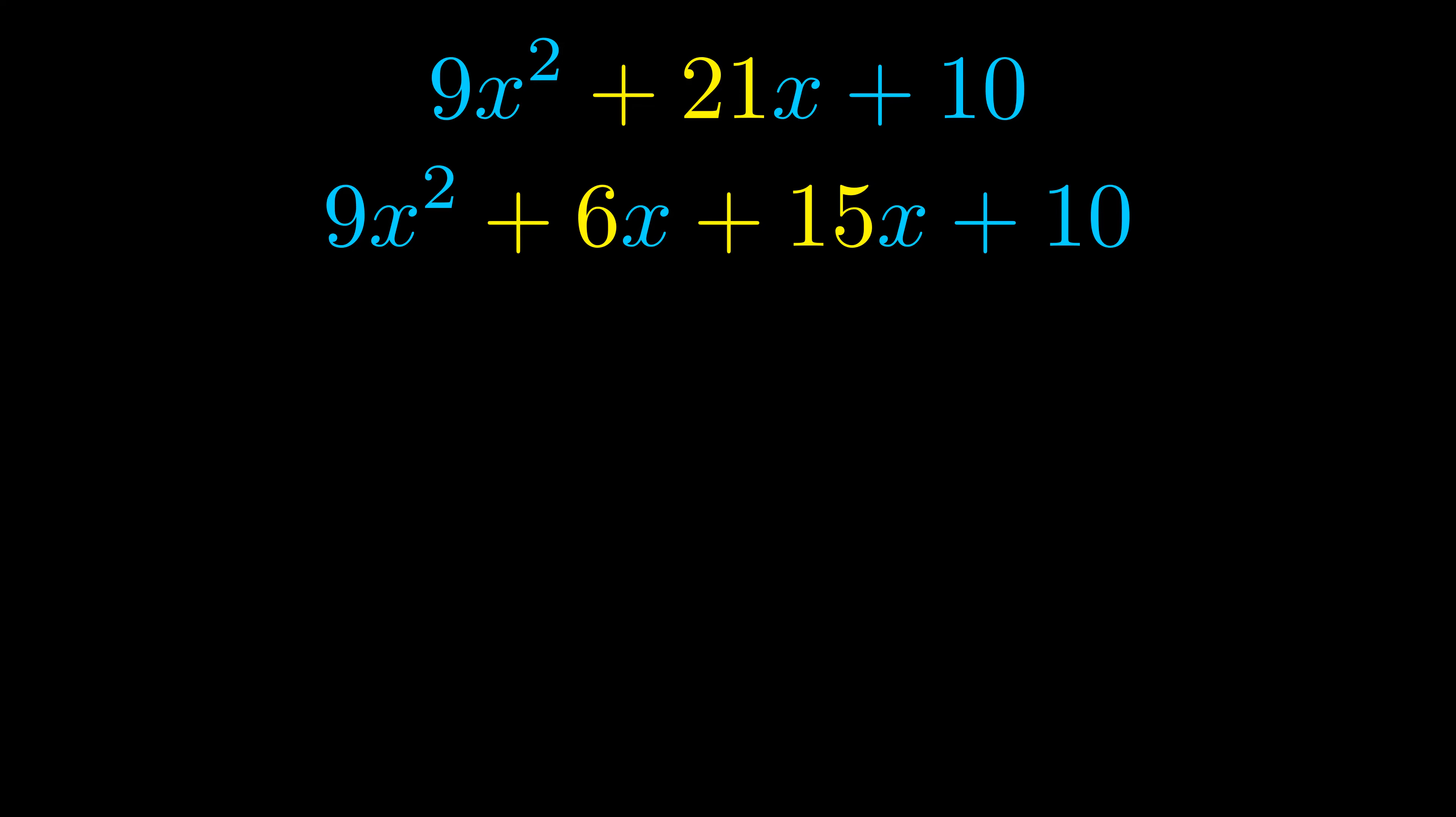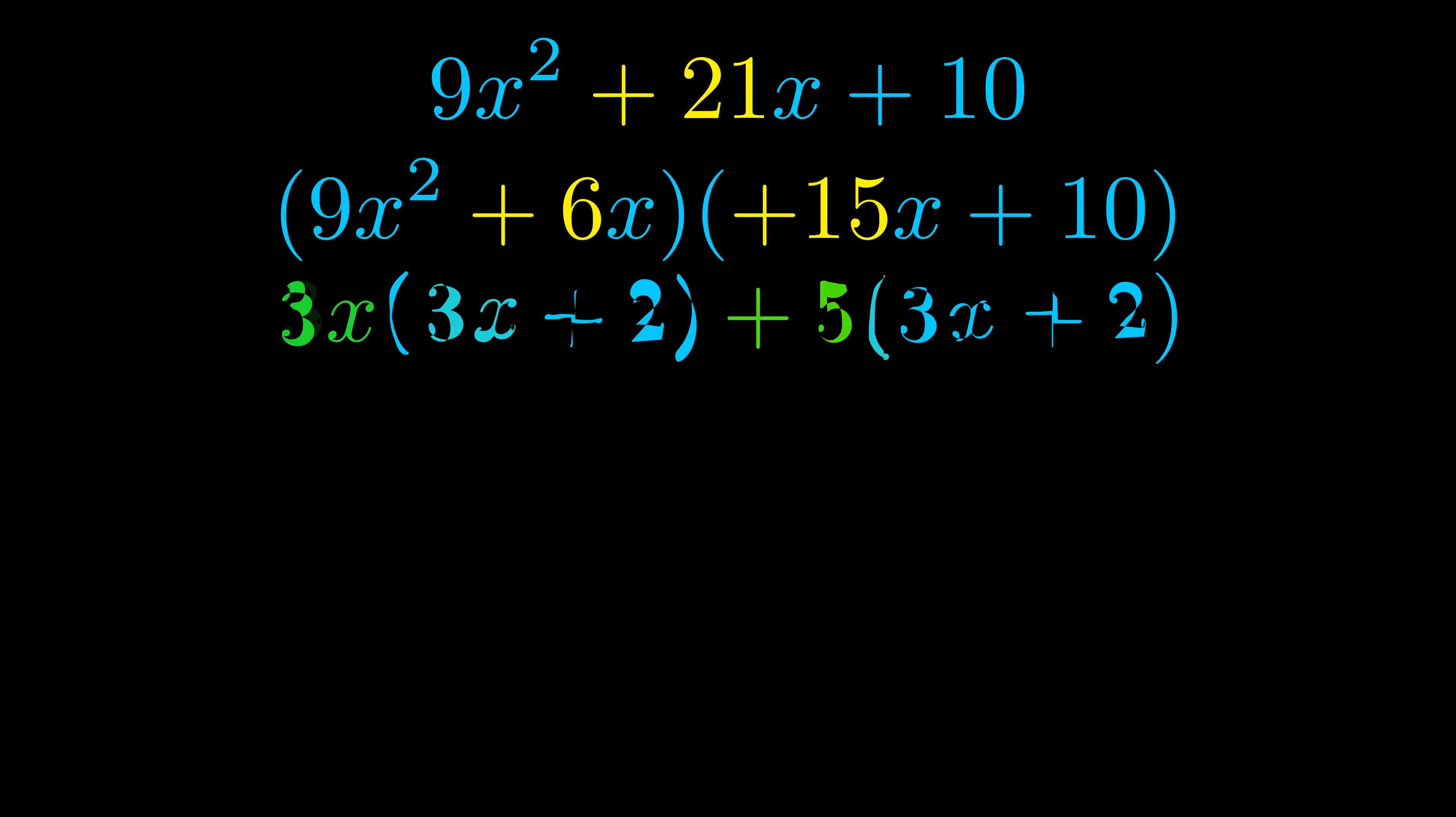Once we've done this we go ahead and put parentheses around the first term and the last term. And we do that so that we can take the greatest common factor out of both terms. We can see the greatest common factor is now outside in green. Notice also how what remains inside of the parentheses is the same in both cases. The blue values are the same.